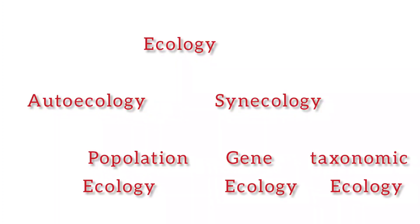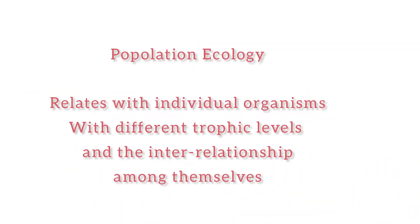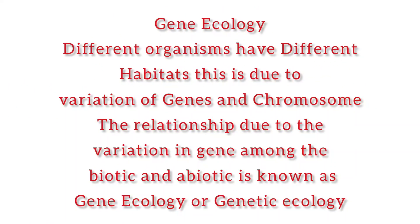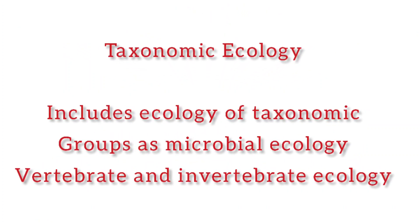Synecology is the study of communities — their composition, behavior and relation to the environment. It is also known as community ecology. Synecology is of three types: population ecology, gene ecology, and taxonomic ecology. Population ecology relates individuals and organisms with different groups and ecosystems at different trophic levels. Gene ecology refers to the relationship due to variation in genes among biotic components with their surrounding non-biotic environment. Taxonomic ecology includes vertebrate, invertebrate and insect ecology, as well as microbial ecology.